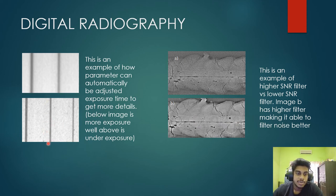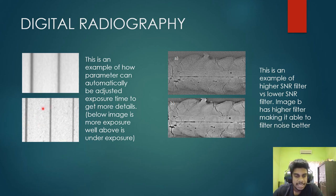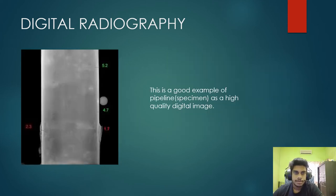On the other side is an image quality test using an IQI to see differences in image quality. The image above is underexposed, resulting in lower resolution. The image below shows better exposure, producing a higher-quality image. This adjustment is usually done automatically by the system, but experts can also manually adjust the timing and other specific parameters. This shows a good quality pipeline specimen as a high-quality digital image because defects can be seen clearly.